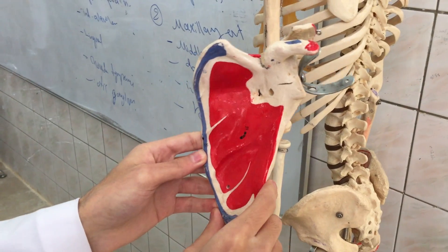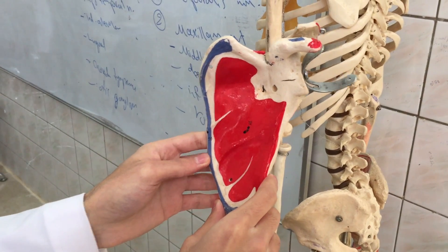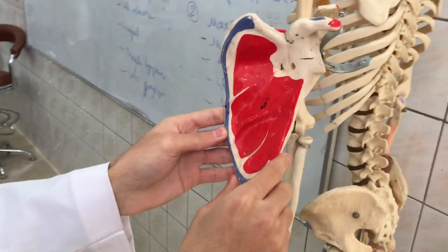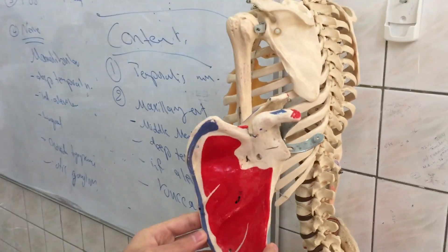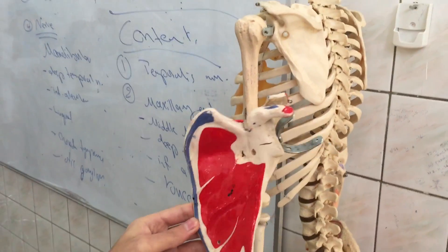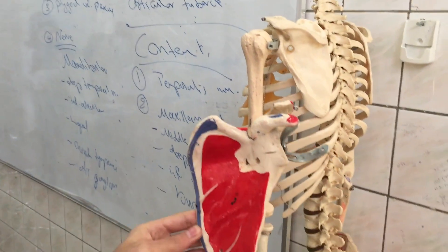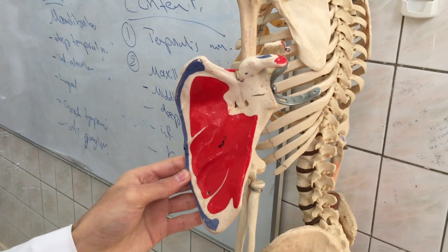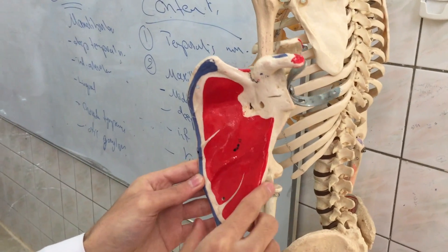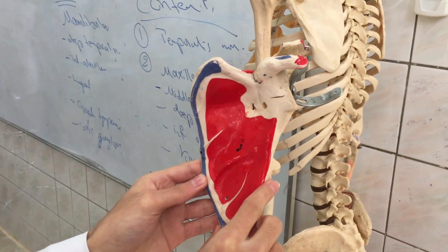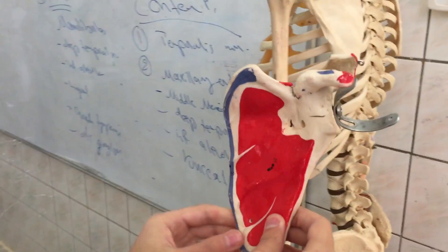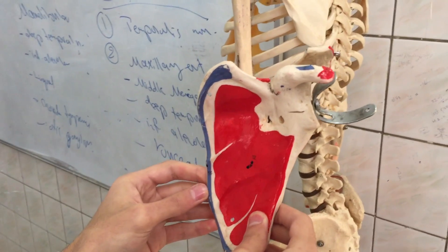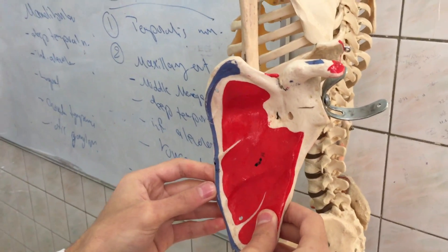Now we're going to talk about the muscle attachments of the scapula. We've got a lot more attachments compared to the clavicle. This is the origin of the subscapularis muscle, and this is the insertion of the serratus anterior muscle.